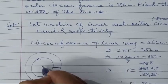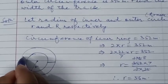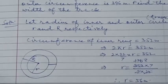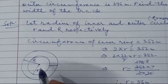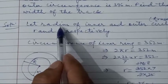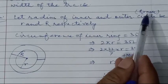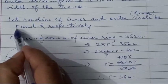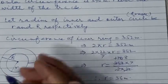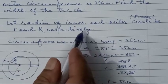We will let the radius of the inner circle be small r and the radius of the outer circle be capital R. Let radius of inner and outer circle of the track be small r and capital R respectively.